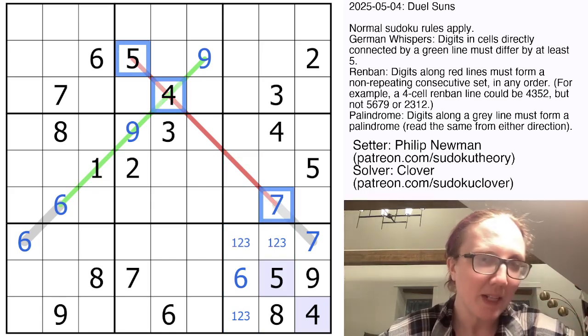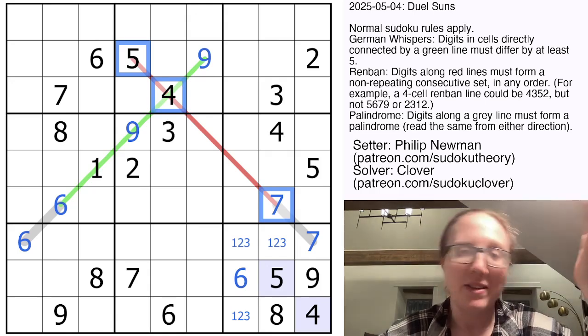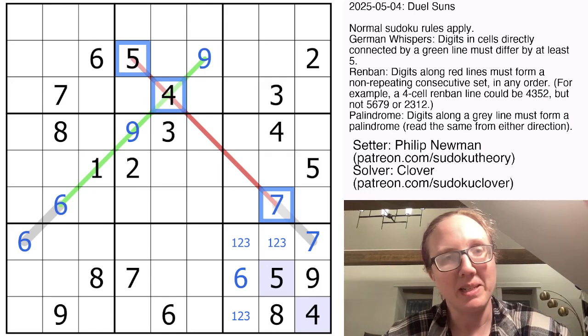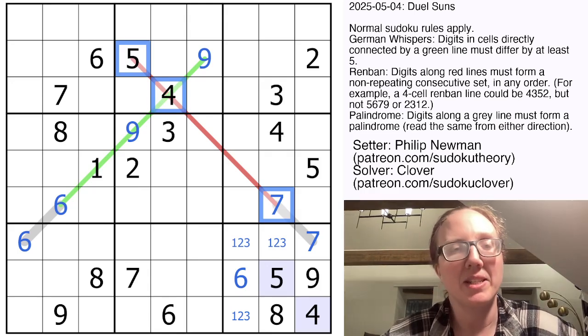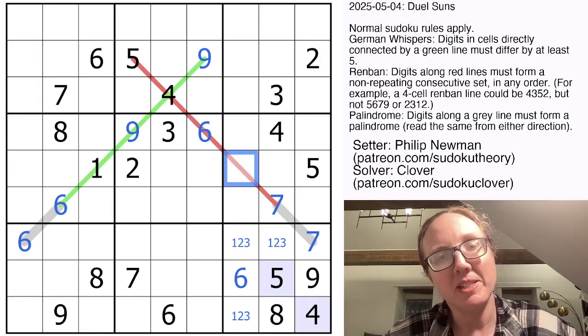Because the set of digits on the Renbon has to be consecutive, we have to have the digits between four, five, and seven as well. Otherwise they wouldn't be consecutive. So we have to have a six, but the six can't go in column seven since there's already a six there. So that's going to be my six. And now this is going to be either three or eight.